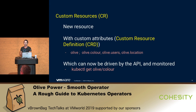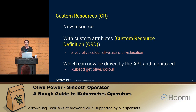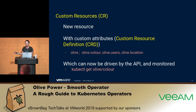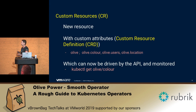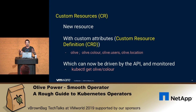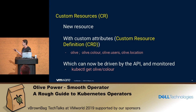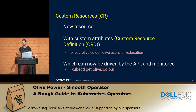You can create custom resources in Kubernetes with custom attributes that describe that resource. For example, Olive might be a resource you're interested in — maybe a complex database application called Olive with attributes like color, users, location. Once you define that custom resource and its attributes — called custom resource definitions, or CRDs — it's now part of the Kubernetes API. You can interact with and query that custom resource through the API through kubectl, for example kubectl get olive color.